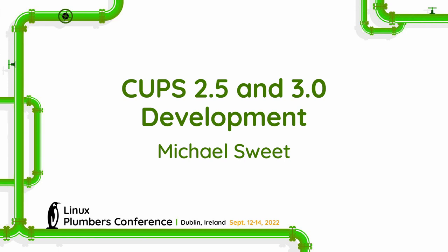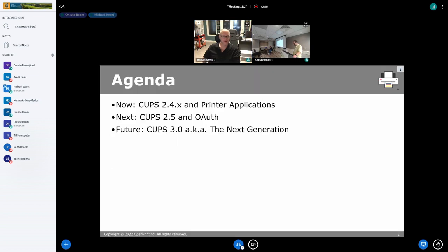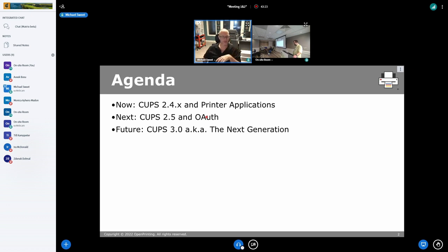Welcome everyone. The mini agenda for this session is to talk briefly about CUPS 2.4x and the printer application, where we stand, then planning for 2.5 and OAuth. We'll probably defer most of the OAuth discussions to later with Piotr, since he'll have a lot more content for that, and then we'll talk about 3.0 and what's been going on there.